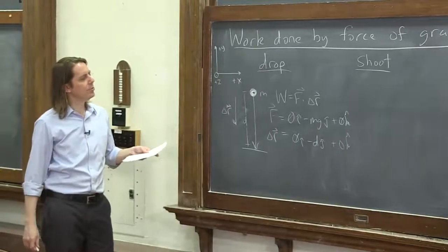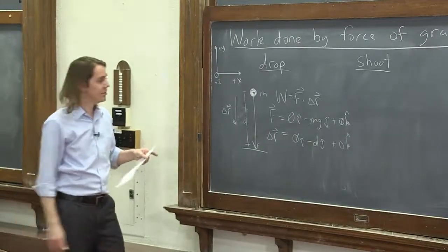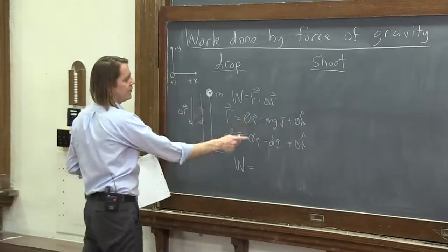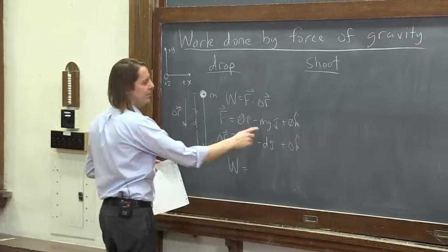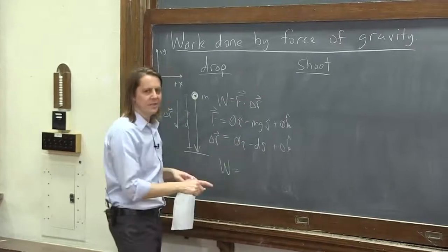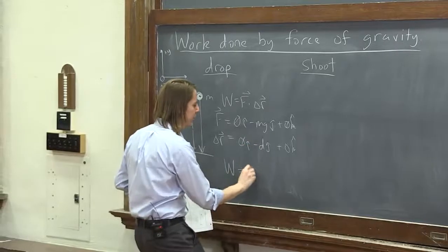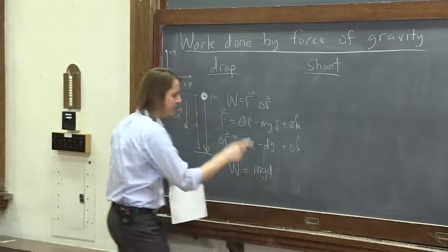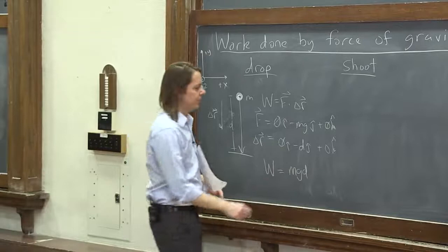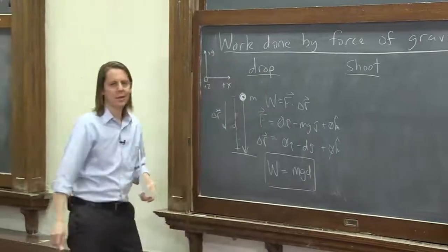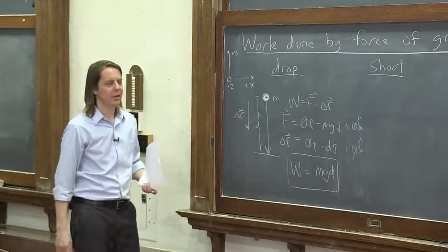So to find the work using our Cartesian definition of the dot product, then it would be just this times this. 0 times 0 is 0. It would be minus mg times minus d. That's mgd, and then the two minuses turn into a plus. That's just a scalar. Plus this one times this one is also 0. So the work is mgd, the work that the gravitational force did on the object.